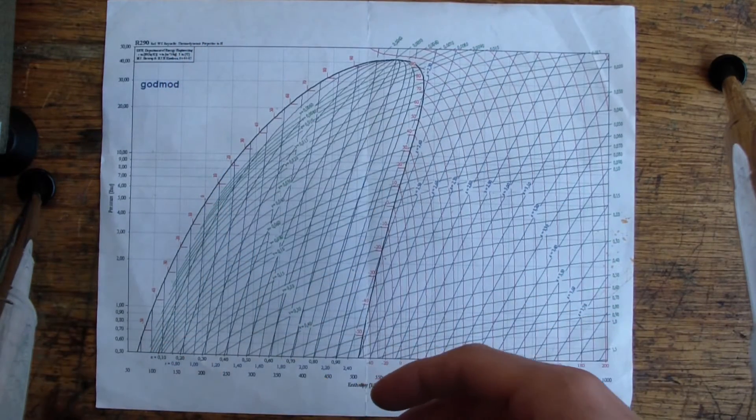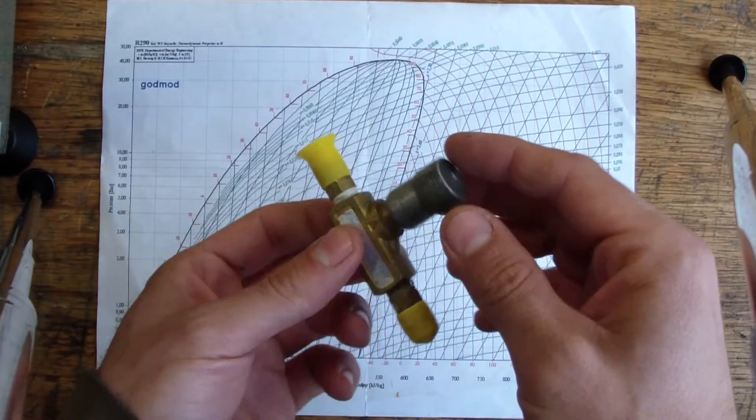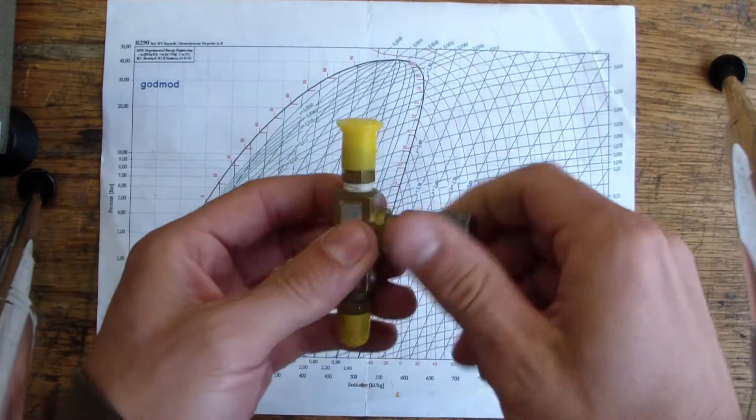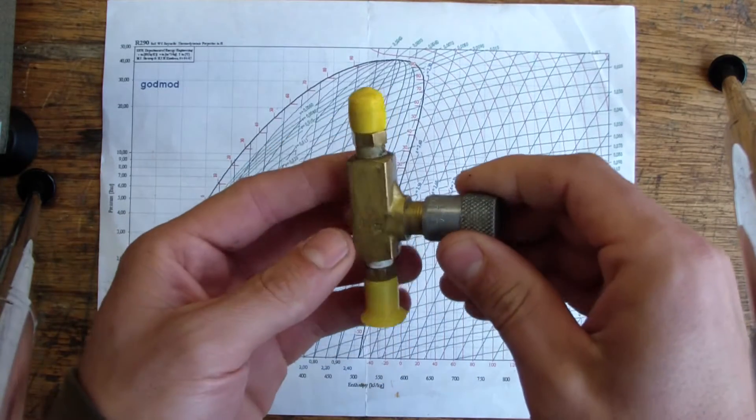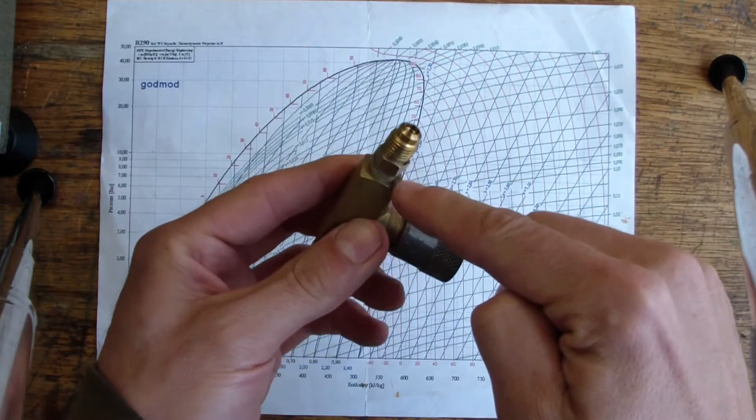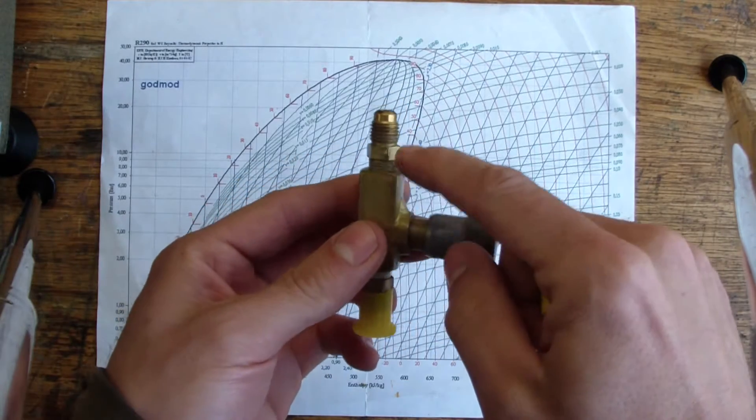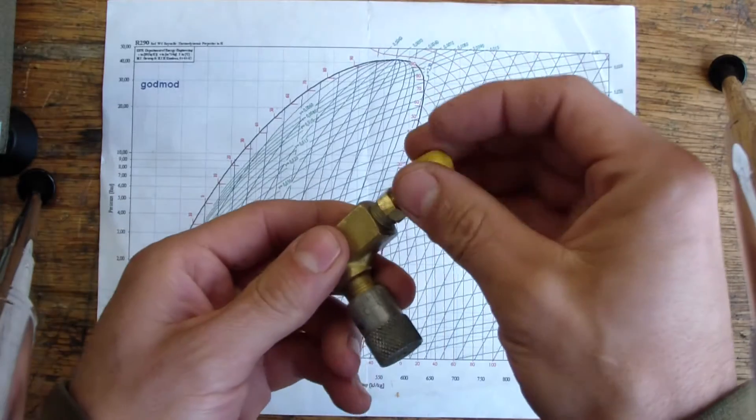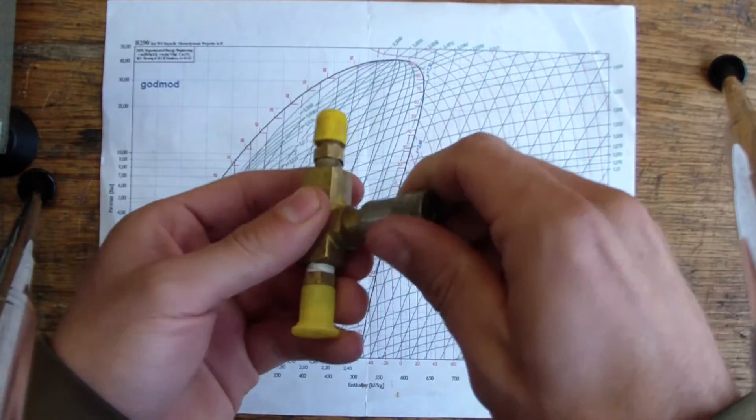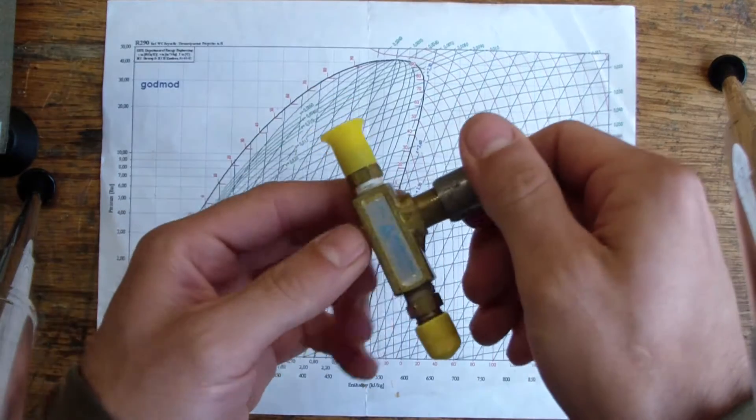So the first valve that I ever used was this. It's a flow control valve. A buddy of mine gave it to me back in Pennsylvania. It came from like an analytical piece of equipment. It's a quarter inch, excuse me, eighth inch pipe thread on this. And I adapted it to quarter inch flare. I don't really know what the valve seat of this really looks like. I never backed the thing the whole way out.